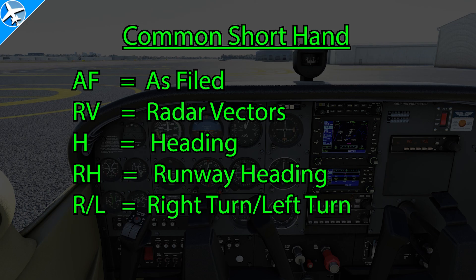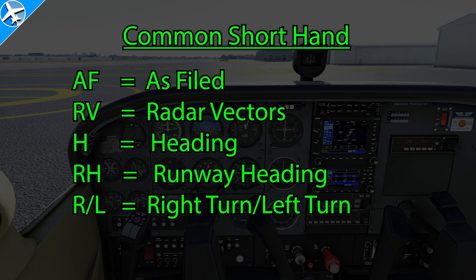Another tip in copying down clearances is to use shorthand abbreviations. These are the common abbreviations I use. The easiest method: come up with your own that you understand. Everyone uses slightly different abbreviations, but there's no right or wrong way to do it.